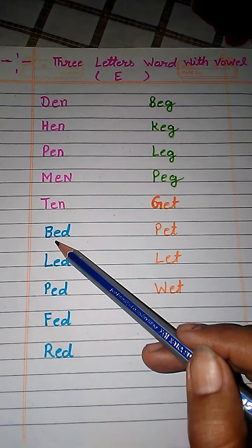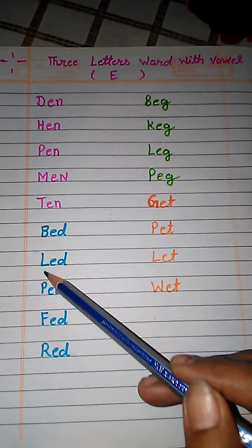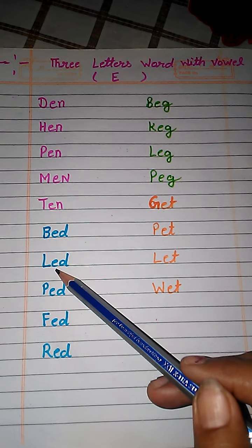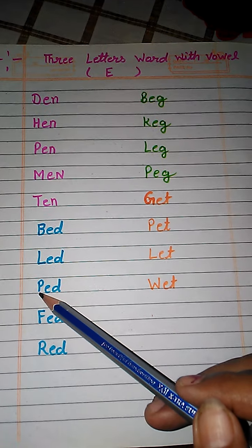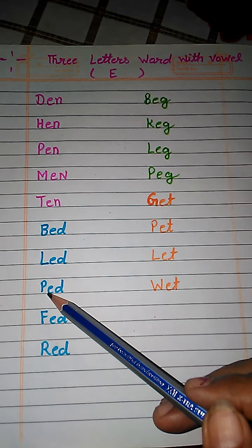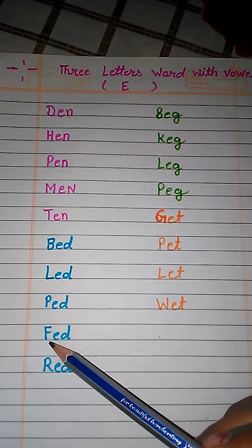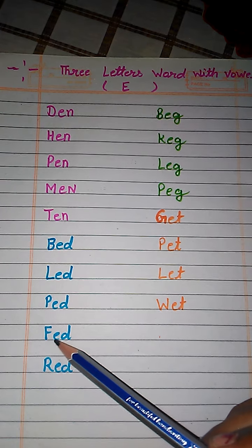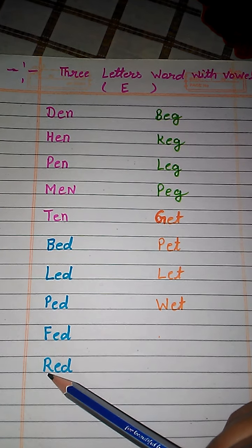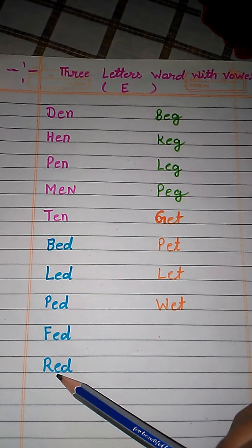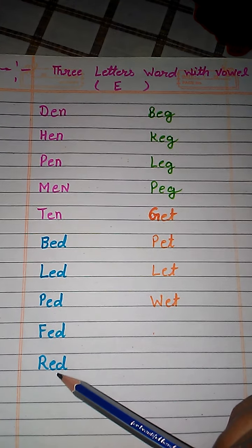B, E, D — bed. L, E, D — led. P, E, D — ped. F, E, D — fed. R, E, D — red.